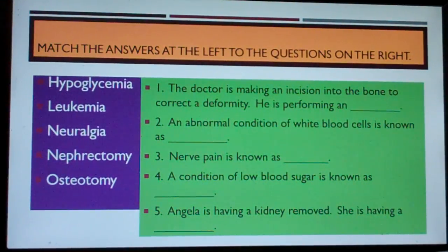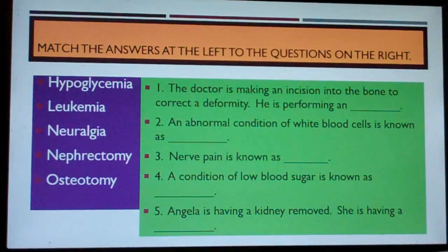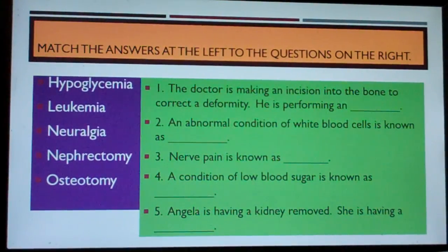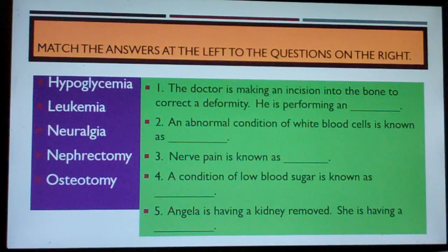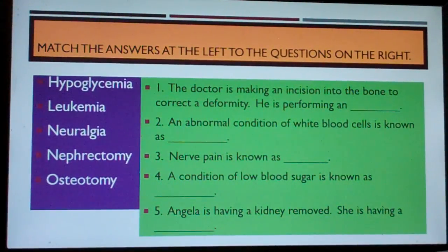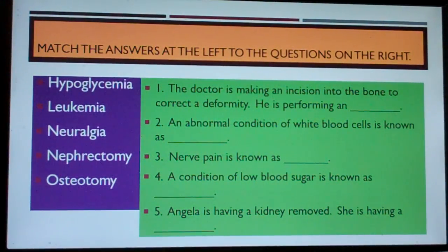Number three: Nerve pain is known as blank. Number four: A condition of low blood sugar is known as blank. Number five: Angela is having a kidney removed. She is having a blank.